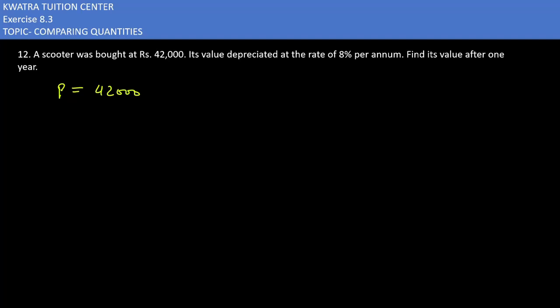Now the next thing it says its value depreciated at the rate of 8% per annum. The rate is there which is 8% per annum. And then they are saying find its value after 1 year. So the time period given to you is 1 year.